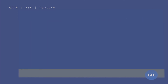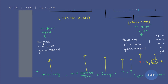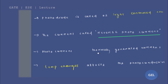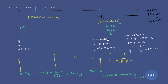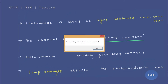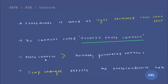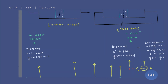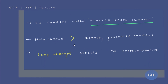Thermally generated current was produced by thermally generated electron-hole pairs. Here, the photocurrent you get is from the summation of minority charge carriers extended due to the application of photons. Photocurrent is greater than thermally generated current, because in photocurrent, the charge density (n) is much higher — that is why photocurrent is greater than thermally generated current.